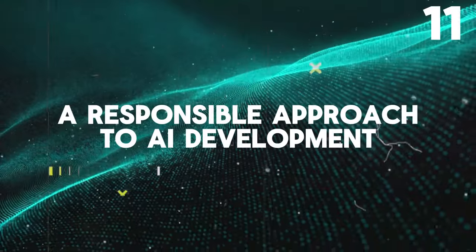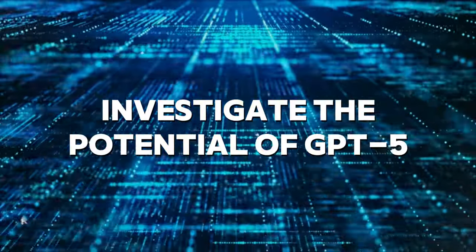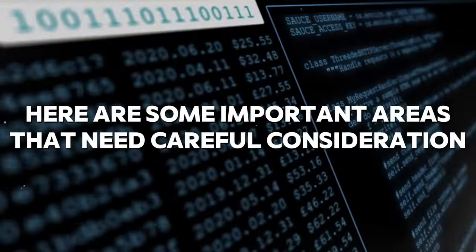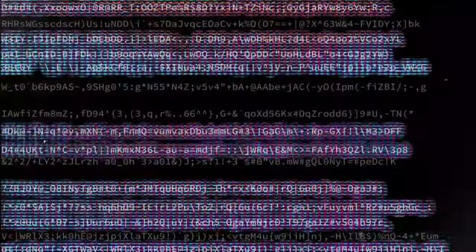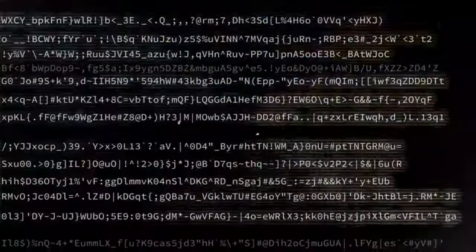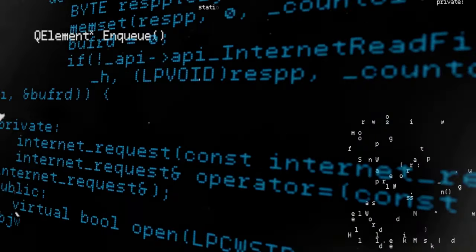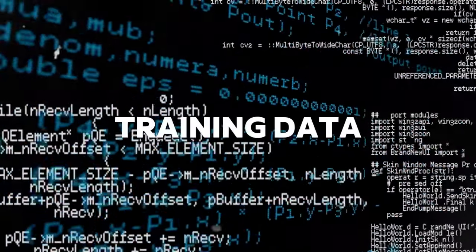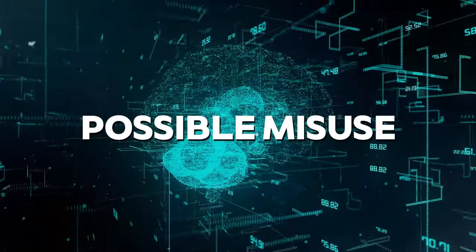The ethical considerations: a responsible approach to AI development. With great power comes great responsibility. As we investigate the potential of GPT-5, it is critical to address the ethical issues surrounding its development and application. Here are some important areas that need careful consideration. Bias in training data: large language models, such as GPT-5, are trained using massive amounts of internet-scraped data. This data may contain inherent biases that the model can perpetuate. Developers must be transparent about the training data used and implement strategies to reduce bias in AI outputs.